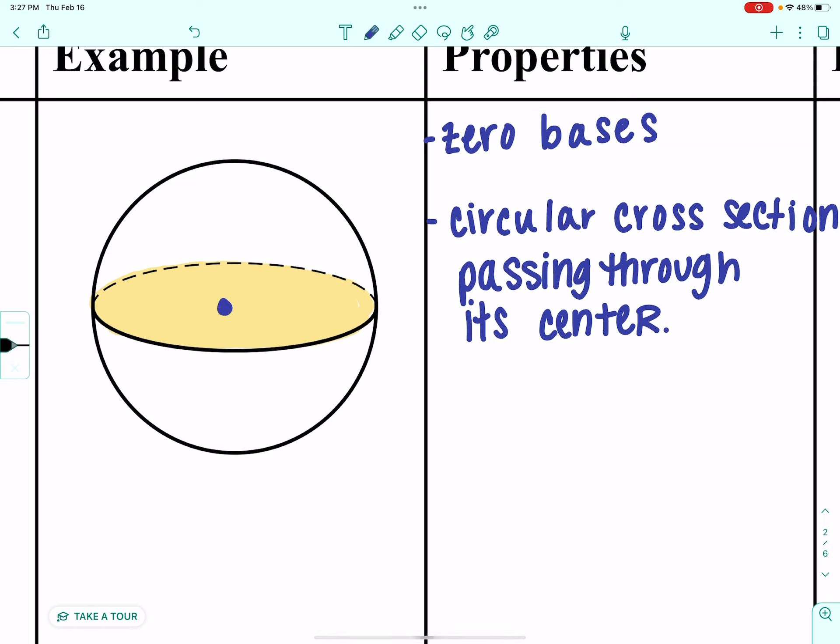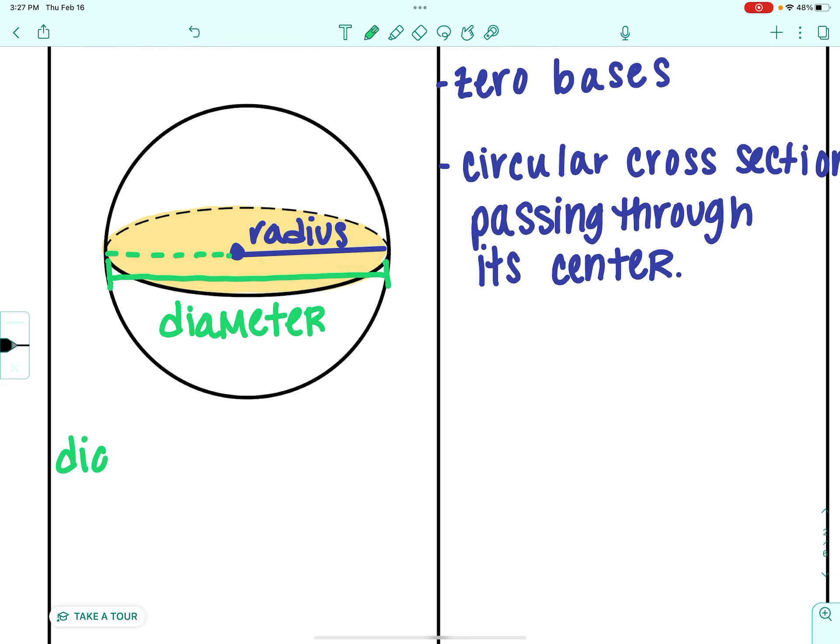So, that circle has a center. It's also the center of the sphere. And that circle has a radius. Now, that circle could also have a diameter if it went all the way across. As soon as our line went from one edge of the sphere to the other through the center, we would have a diameter. And just a reminder that a diameter is equal to 2 times the radius.